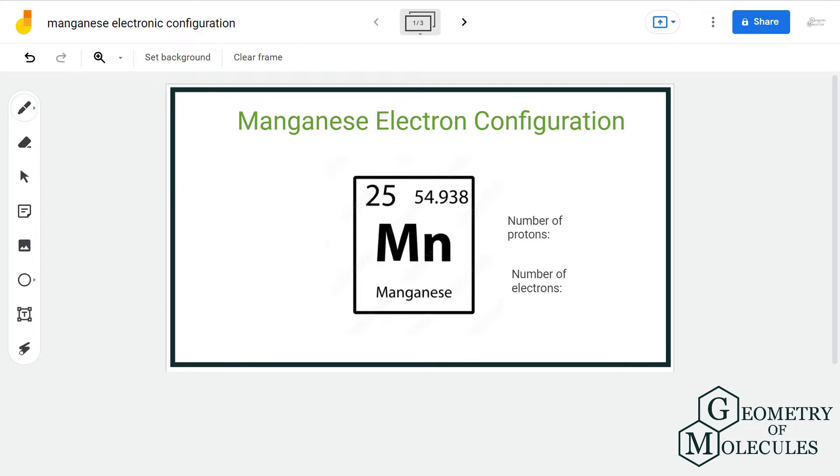When we look at the periodic table, we see that manganese has an atomic number of 25, which means it has a total of 25 protons and 25 electrons.